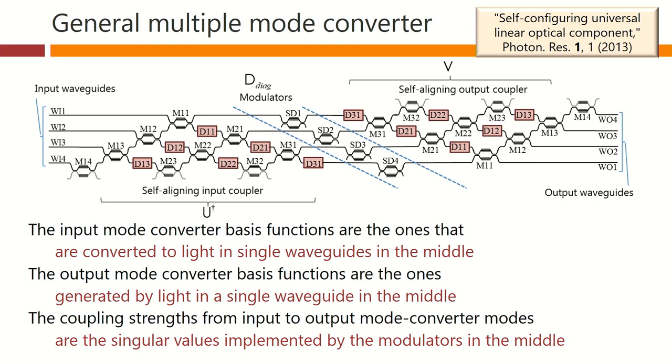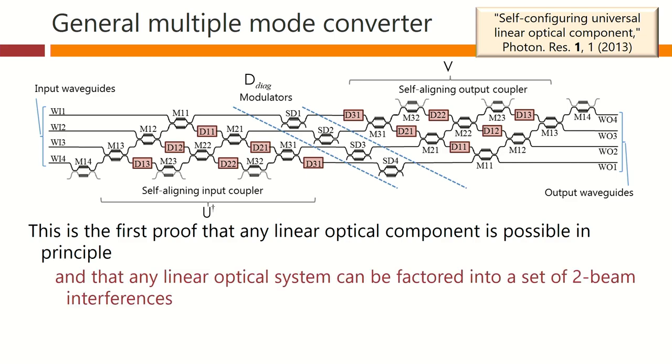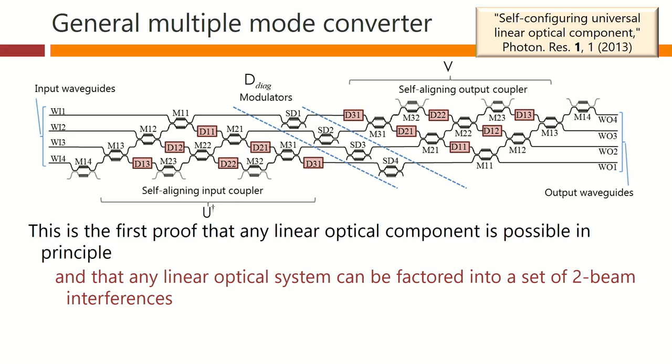Note that we are implementing an arbitrary linear optical component by constructing it using its mode converter basis sets. The input mode converter basis functions are the ones that are converted to light in single waveguides in the middle. The output mode converter basis functions are the ones generated as a result of light in one of these waveguides. The coupling strengths from the input to output mode converter modes are the singular values as implemented by the modulators in the middle. This is the first proof that any linear optical component is possible in principle, and that any linear optical system can be factored into a set of two-beam interferences. The fact that we can now in principle make any linear optical component at a given frequency means we can do thought experiments based on that. We can, for example, use this approach to prove new and extended versions of Kirchhoff's radiation laws and Einstein's A and B coefficient argument. These new laws apply only and uniquely to these mode converter basis sets. This approach also allows a convenient quantization of the electromagnetic field without the usual arbitrary boxes, so it has some quite interesting fundamental aspects to it.